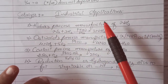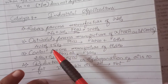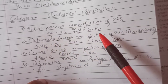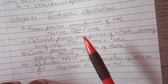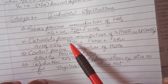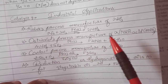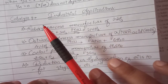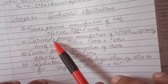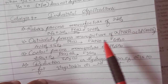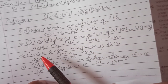In Haber's process, the manufacture of ammonia uses iron as the catalyst. Next is Ostwald's process, where we manufacture nitric acid. The catalyst used is platinum, which is in the solid state. So: Haber's process — ammonia — iron catalyst; Ostwald's process — nitric acid — platinum catalyst.